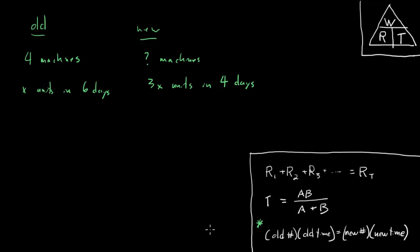Although as we learned a few videos ago, this formula only applies directly when the machines before the change are doing the same amount of work as the machines after the change. And right now, after the change, the unknown number of machines are doing three x units, and before the change they're only doing x units. I guess that's not a huge problem because we can quickly change our work to be the same for both.